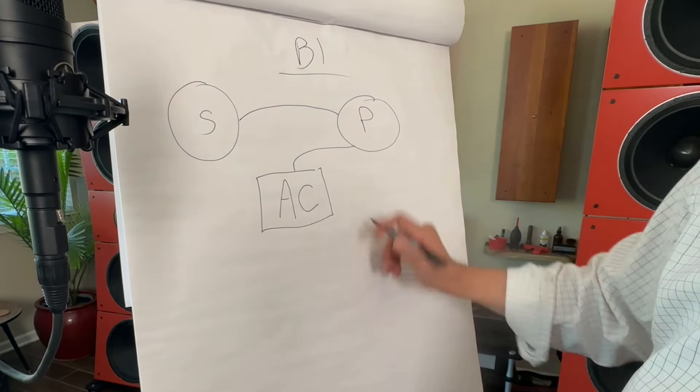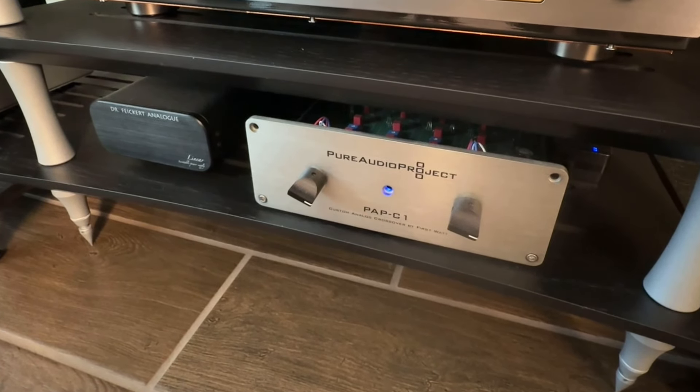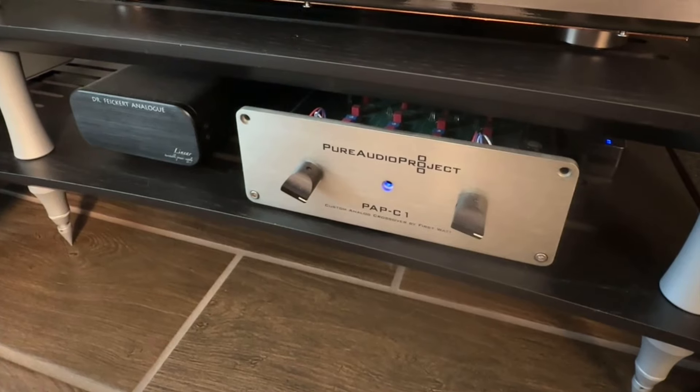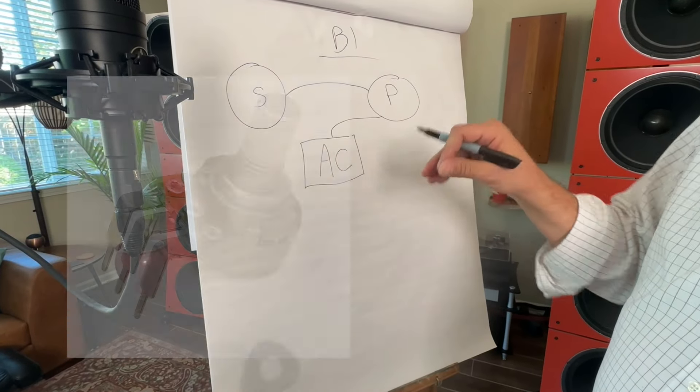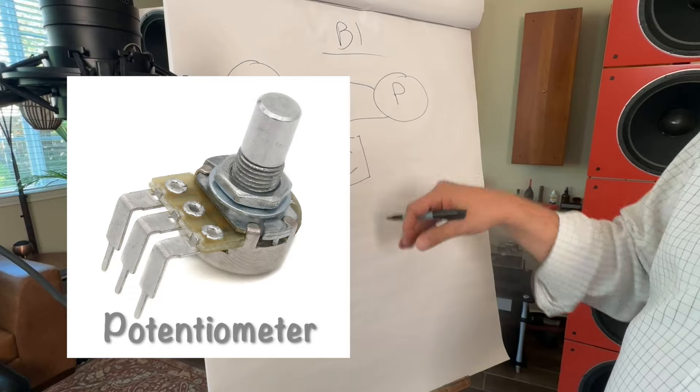The idea behind an active crossover is that before the signal gets to the amplifiers, we do our splitting and set our slopes inside this box. I have the lid off the active crossover to give you a peek inside. One thing you'll notice is a decided lack of coiled-up wires. You use a tiny screwdriver to change your frequency points and slopes. Something like the Marchland puts all controls on the front panel, but this is a beautiful crossover designed specifically for Pure Audio Project speakers. The active crossover is electronic, plugged in, with knobs or potentiometers to change frequency cutoffs and set slopes.